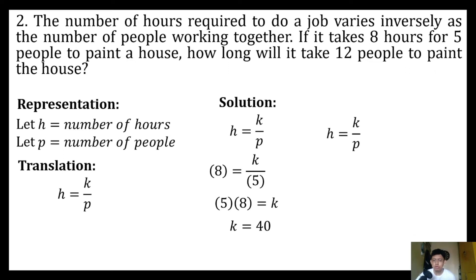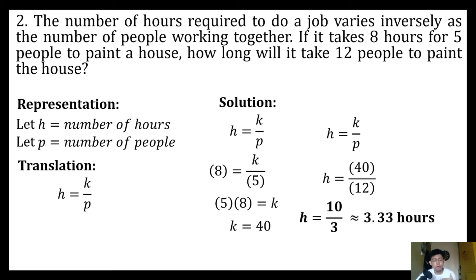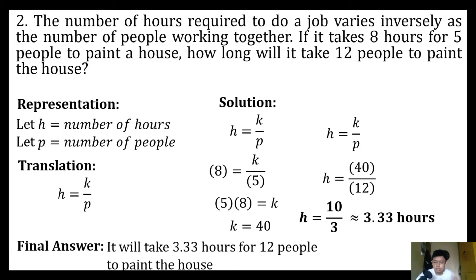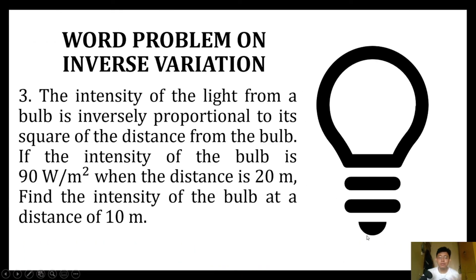Now that we have our constant of variation, we can solve for the number of hours for 12 people to paint the house using the same formula, substituting the constant of variation and the number of people. We have 40 divided by 12, so it will take 10 over 3 hours, or 3.33 hours. We can conclude that it will take 3.33 hours for 12 people to paint the house.